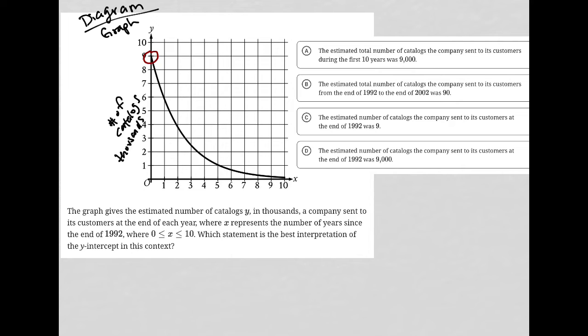Where x represents the number of years since the end of 1992, where x is between 0 and 10. So the x-axis is years after 1992, which means, for instance, year 1 would be 93 and 94 and so on and so forth.